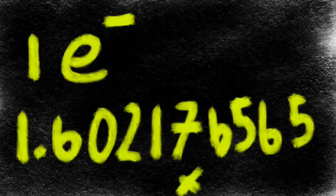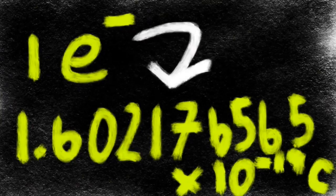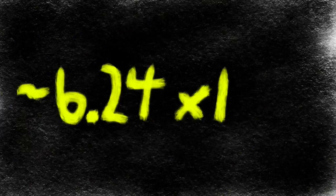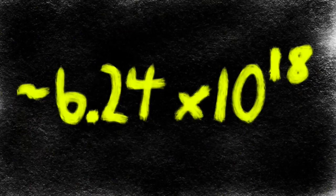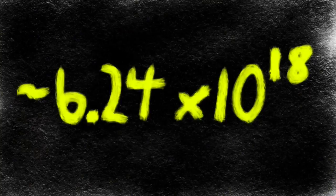One electron is actually equal to about 1.6 times 10 to the negative 19 Coulombs. So it's going to take a lot of electrons to equal one Coulomb. That means about 6.24 times 10 to the 18th. In perspective, a million is 10 to the 6th, a billion is 10 to the 9th, a trillion is 10 to the 12th. So that's times 10 to the 18th. It's a lot of electrons to get one Coulomb.